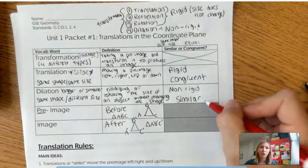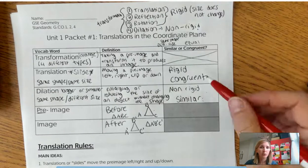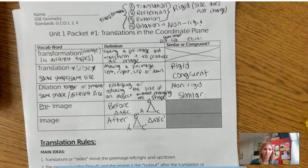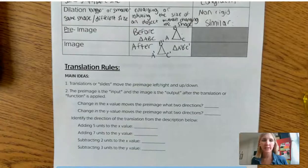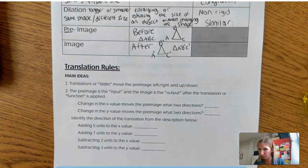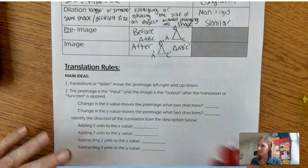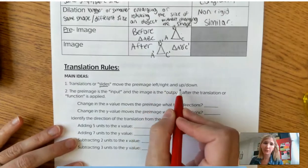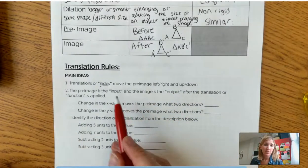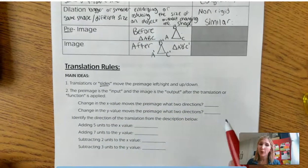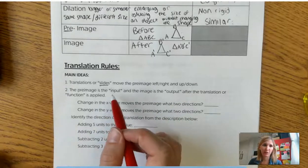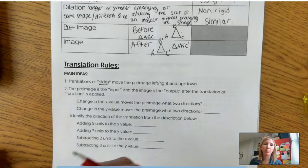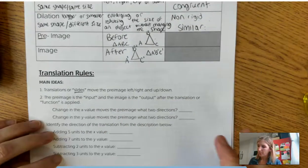This will come in later in Unit 2. I just wanted to start introducing it now so you hear these words: congruent, similar, rigid, non-rigid. Now let's get into the translation rules. Like how do we actually do a translation? What does that mean? We said that translations, or slides, move the pre-image left, right, up, or down. So if we're thinking about this in terms of functions, which I know you talked about in Algebra 1, your pre-image is first, it's the input, and your image is the output.